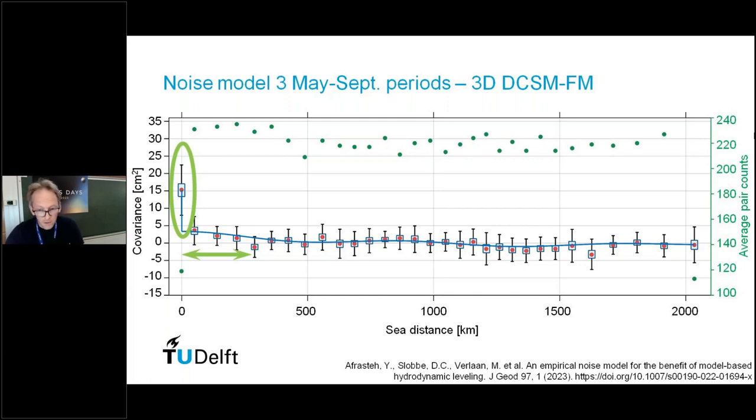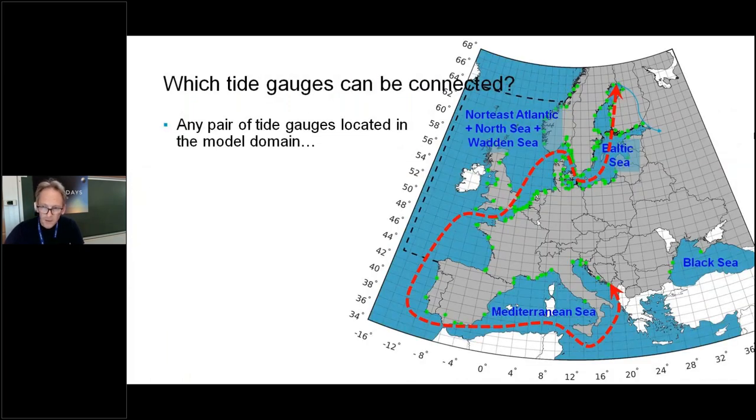The next question goes more to the implementation: which tide gauges can be connected? Basically, if we would have access to a model that covers all European waters, we could connect any pair of tide gauges, at least if they are included in the model domain. That would mean we would go from somewhere in the Mediterranean all the way up to the Baltic Sea without any problem.